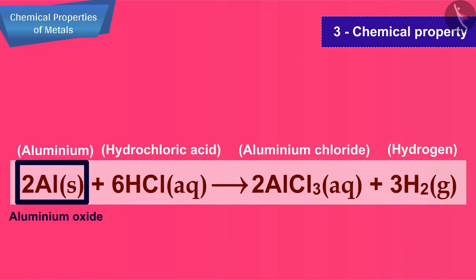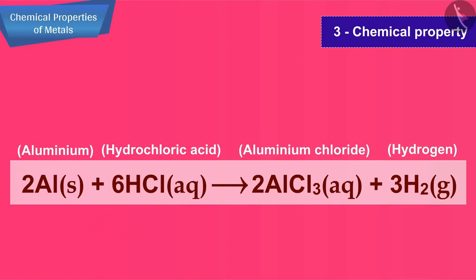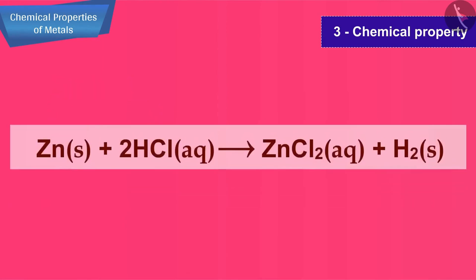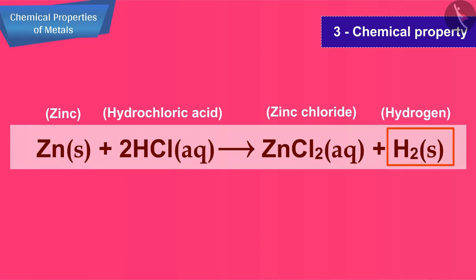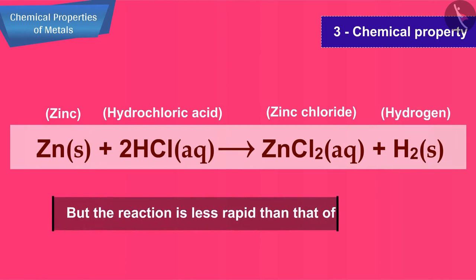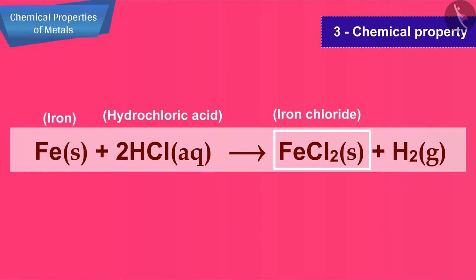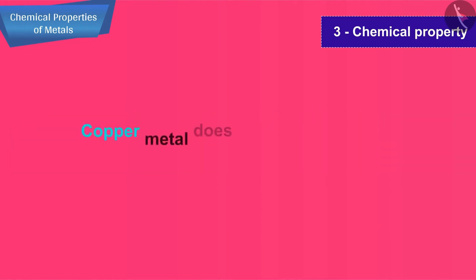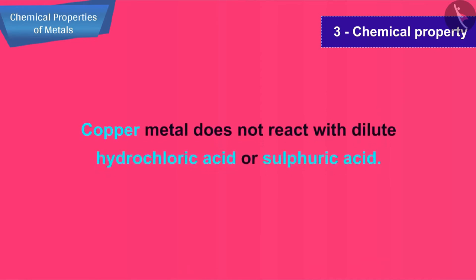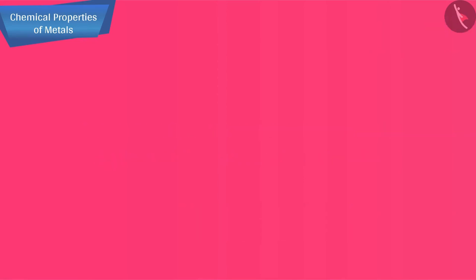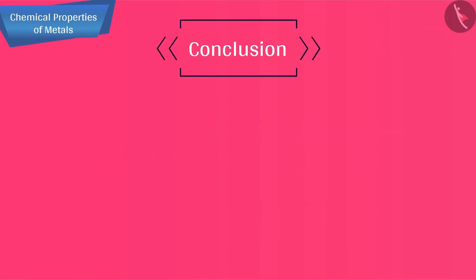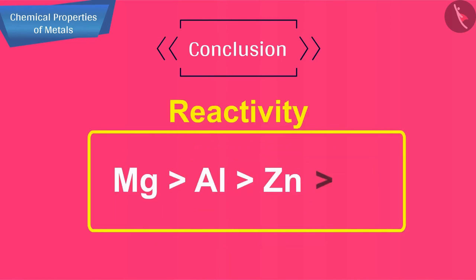But when the thin outer oxide layer gets dissolved in acid, fresh metal is exposed and reacts rapidly with dilute hydrochloric acid. Zinc also reacts with dilute acid to give zinc chloride and hydrogen gas, but the reaction is less rapid than that of aluminium. Iron reacts with dilute acid to give iron chloride and hydrogen gas. Copper metal does not react with dilute hydrochloric acid or sulfuric acid, showing that copper is least reactive. From this, we can conclude that the reactivity decreases in this order.